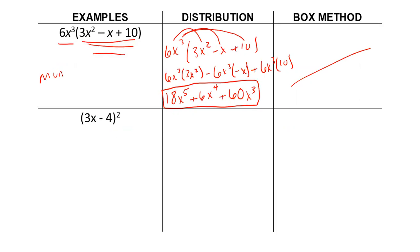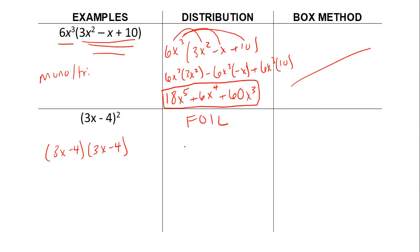Here we have a binomial squared, which means I actually have 3x minus 4 times 3x minus 4. Using distribution, also known as FOIL — it's just a process for distribution that's supposed to help us. So 3x times 3x: my first gives me 9x squared.